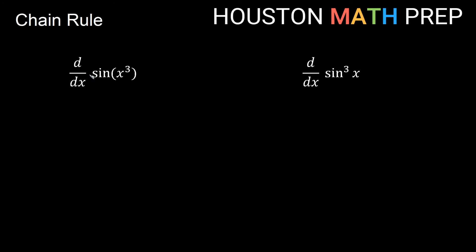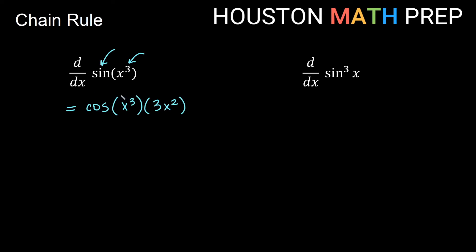Looking at some more examples with trig functions: we have the derivative with respect to x of sine of x cubed. Notice that the cube is inside of the sine function, so the outer idea is sine and the inner idea is cubing x. So I'll do the sine part first, then worry about the cube. The derivative of sine of something is cosine of that something, so cosine of x cubed, times the derivative of the inside. The derivative of x cubed by power rule: 3 comes out front, power goes down by 1, we get x squared. So we rewrite this as 3x squared times cosine of x cubed.